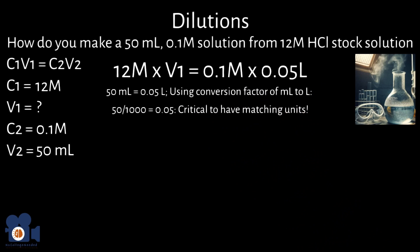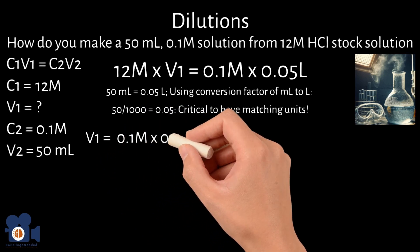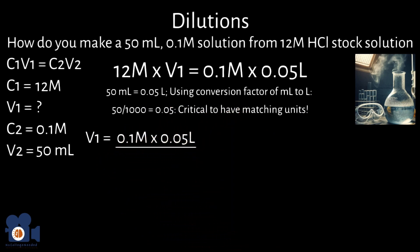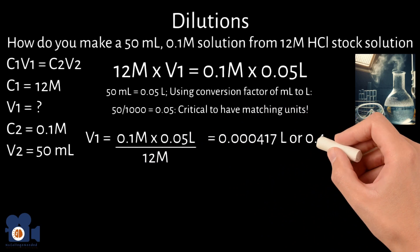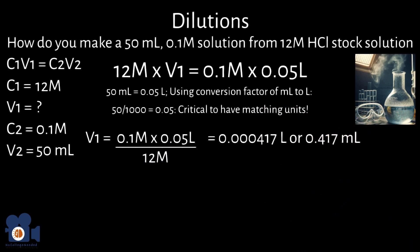V1 is the only unknown variable, and solving for it would be V1 equals 0.1 molar times 0.05 liters divided by 12 molar equals 0.000417 liters or 0.417 milliliters.